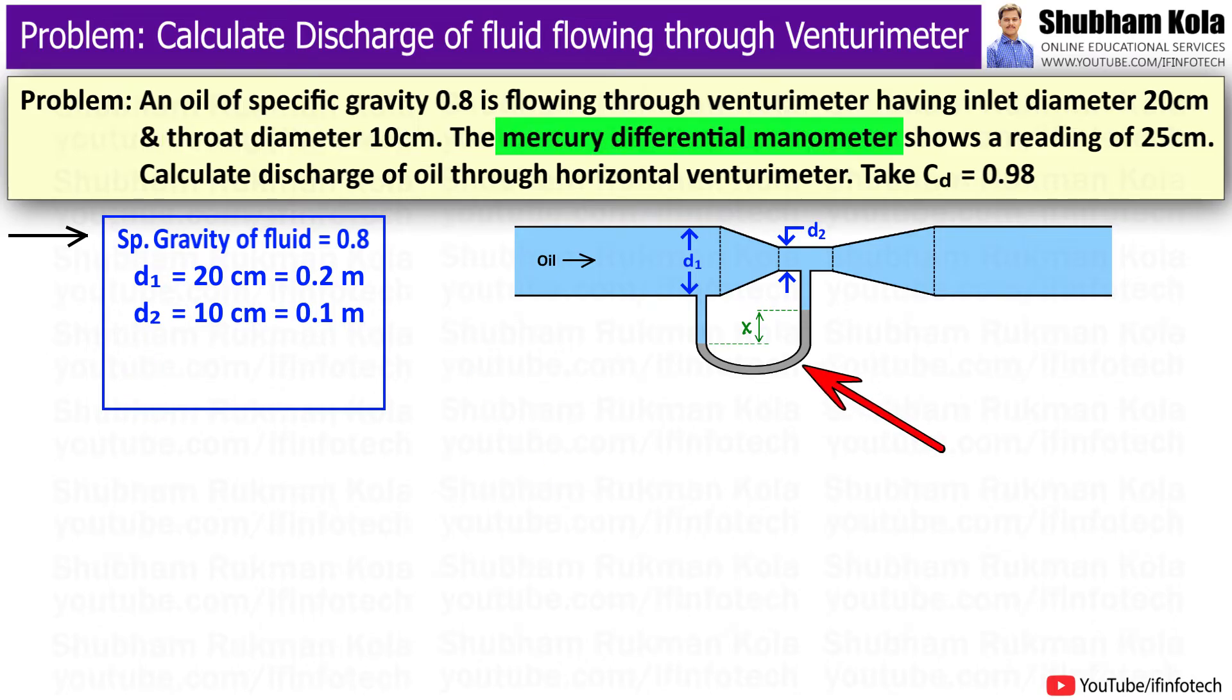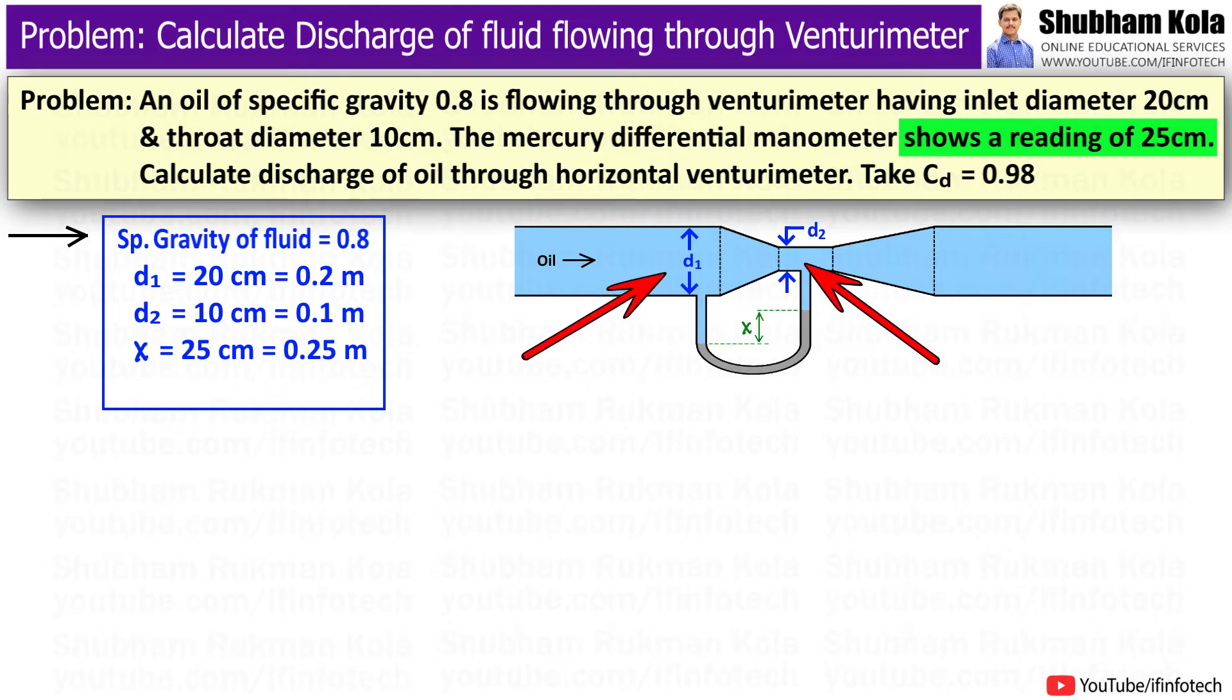The mercury differential manometer shows a reading of 25 cm, so x equals 0.25 m. This represents the pressure difference at inlet and throat of Venturimeter. The coefficient of discharge Cd is given as 0.98.